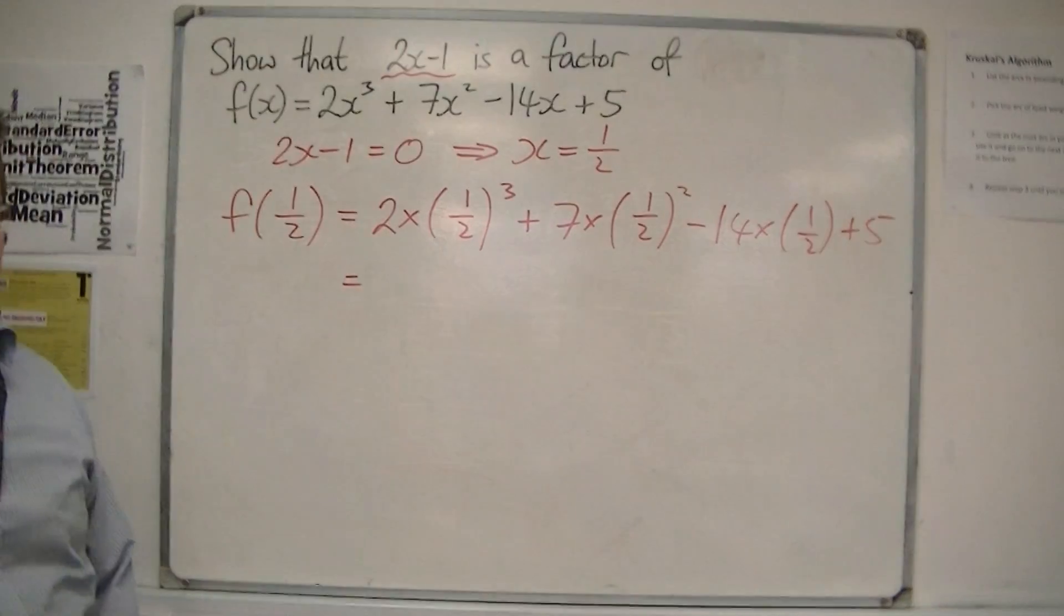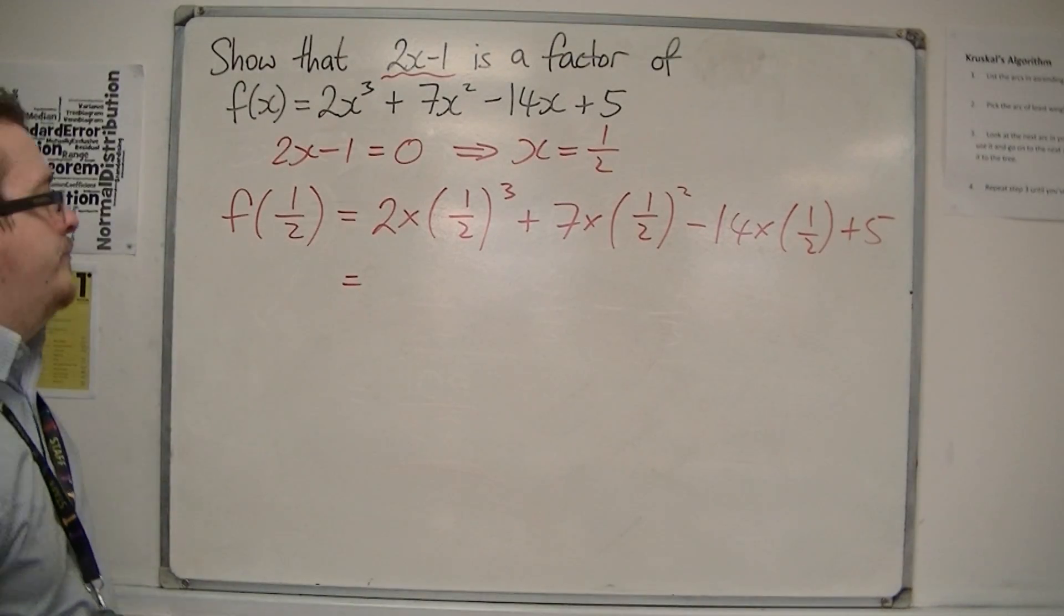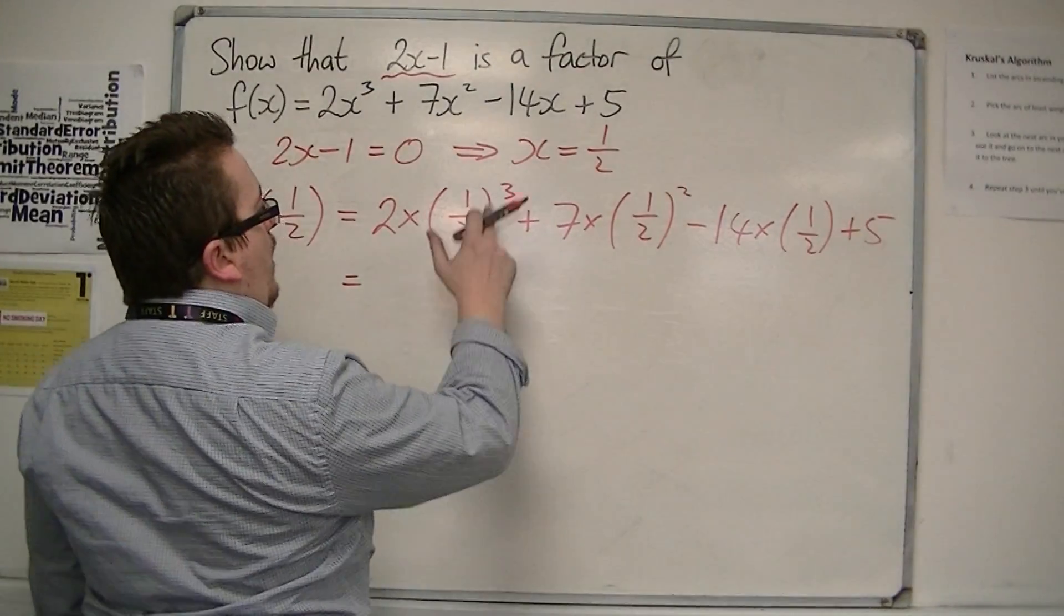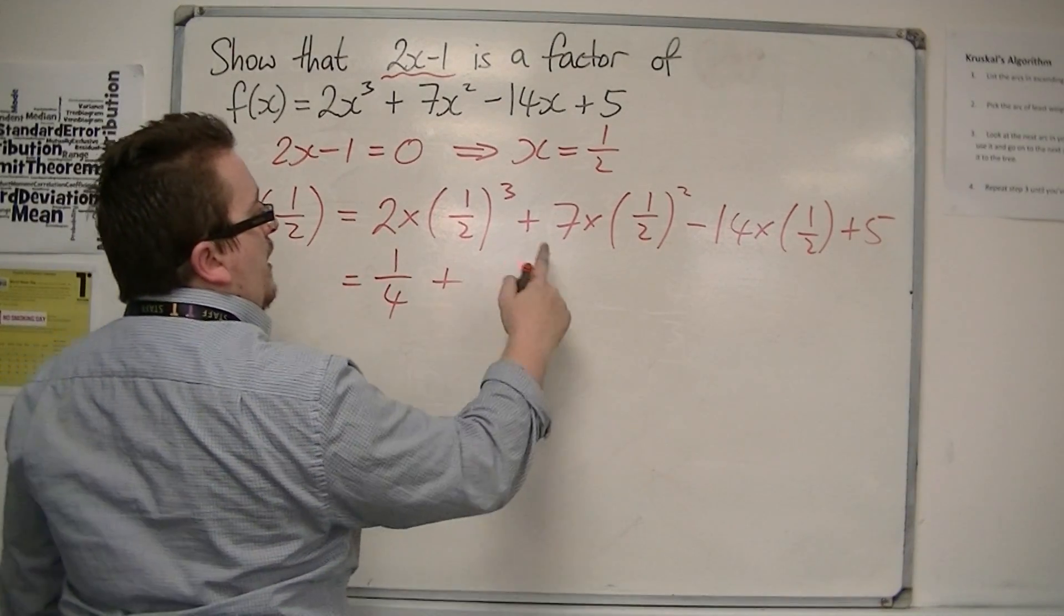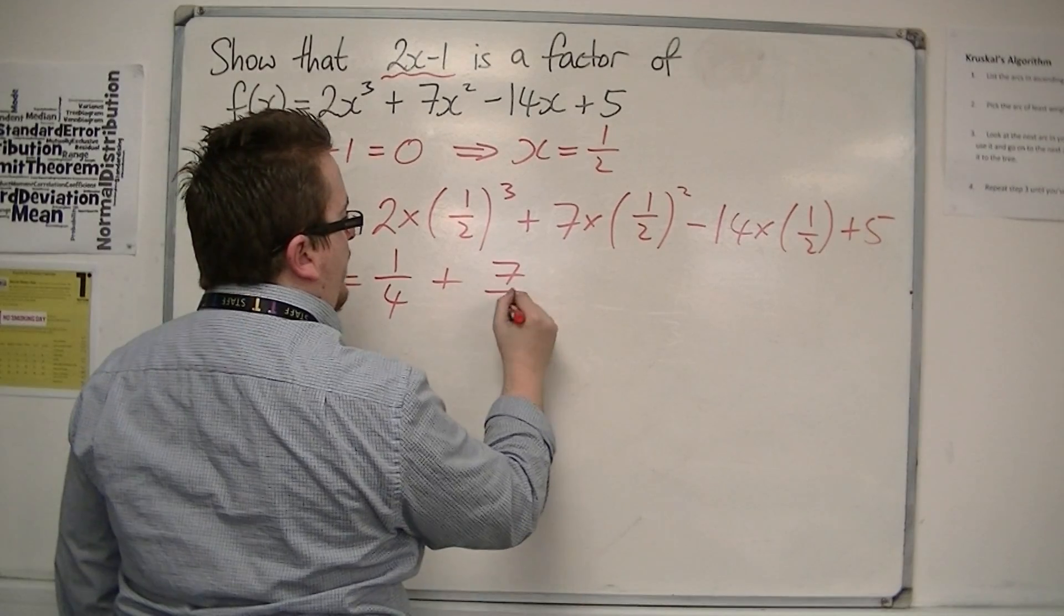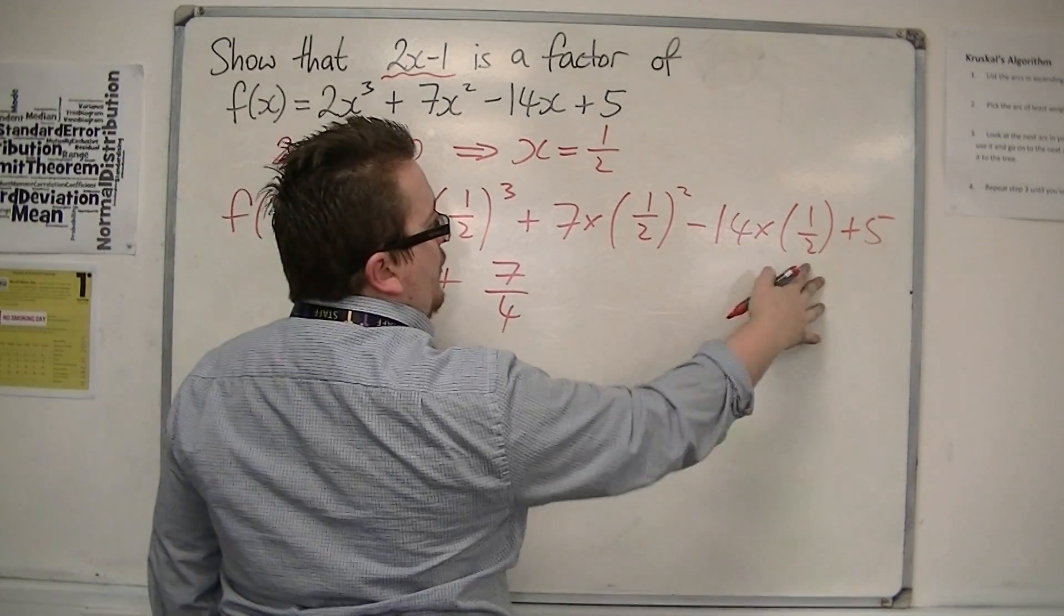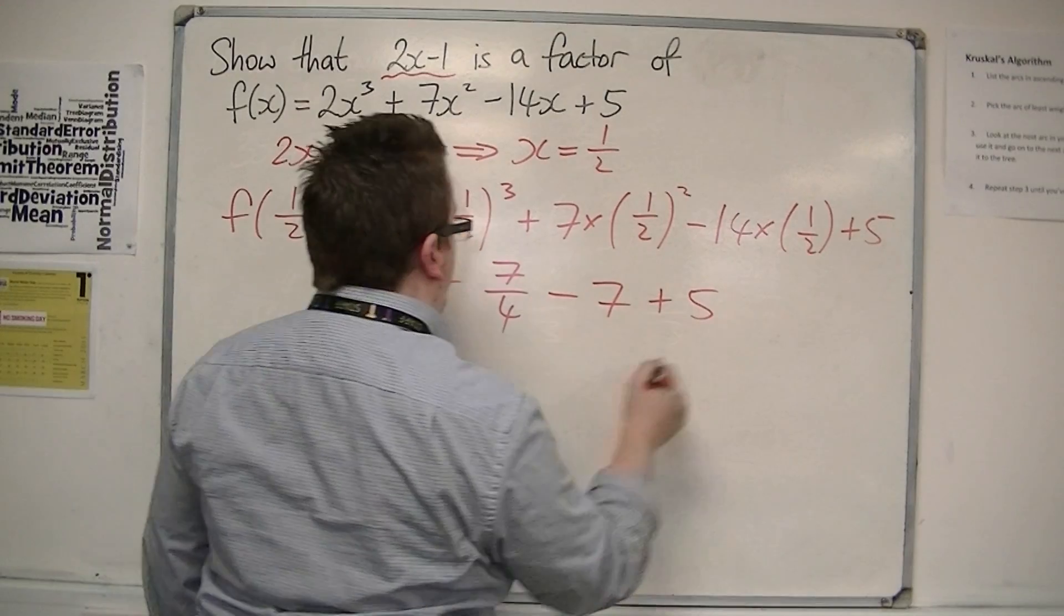Making use of the brackets is quite useful here. We have 1/8 times 2 is 1/4, plus 7 lots of 1/4, so 7/4, minus 14 lots of 1/2, so that's -7, plus 5.